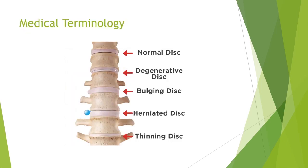Some medical terms you may have heard include degenerative disc disease. This is a normal aging process that occurs at our discs and begins at about age 30. Because our discs are filled with fluid, as we get older we start to lose some of that fluid and our discs can start to shrink in height — this is why we all get shorter as we get older.